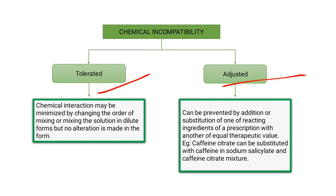Adjusted chemical incompatibility can be prevented by adding or substituting one of the reacting ingredients of the prescription with another of equal therapeutic value. For example, caffeine citrate can be substituted with a caffeine in sodium salicylate and caffeine citrate mixture.